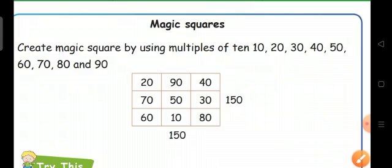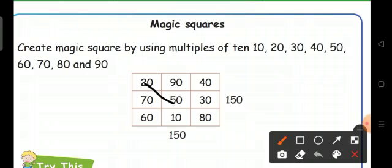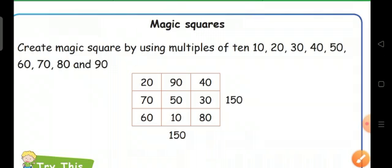So next adding the diagonals 20 plus 50, 70, 70 plus 80, 150 and next 40 plus 50, 90, 90 plus 60 we get 150. So this is a magic squares.